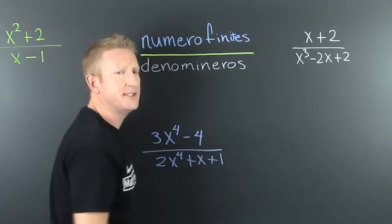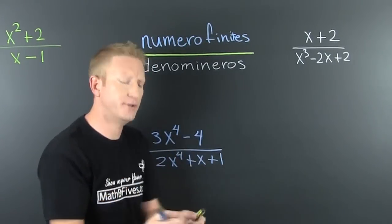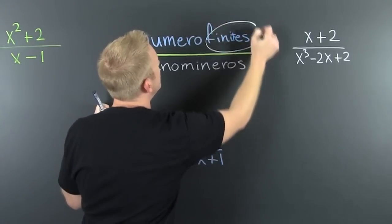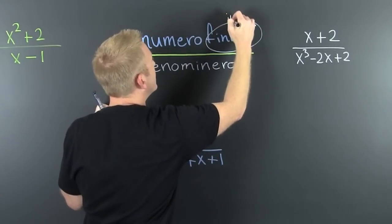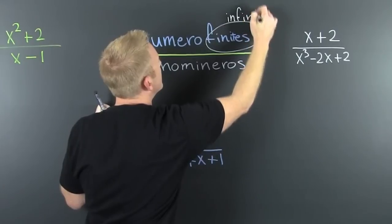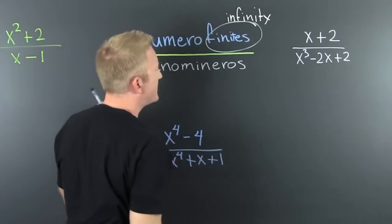If the numero finis win, if they're larger in degree, then their asymptotes go to infinity. And that's why I spelled it like that.